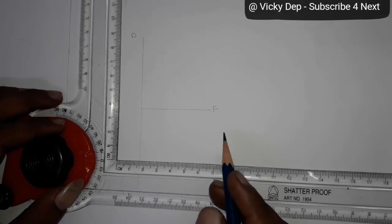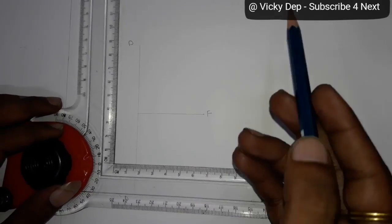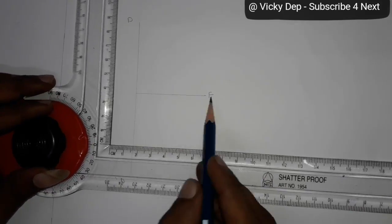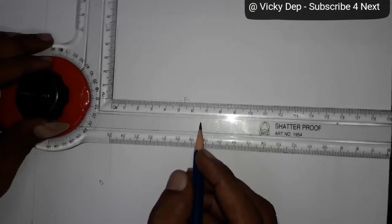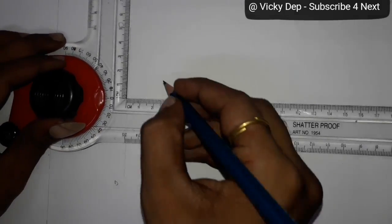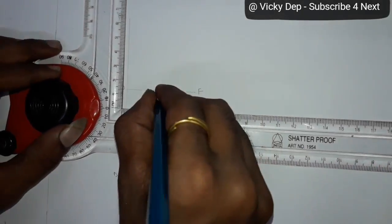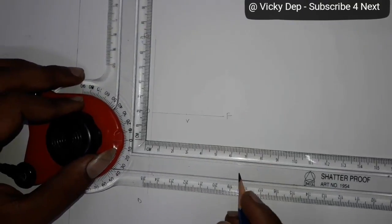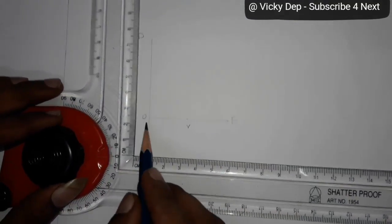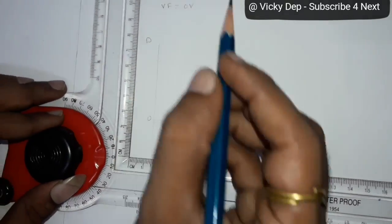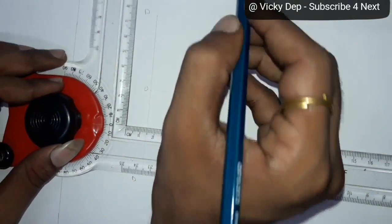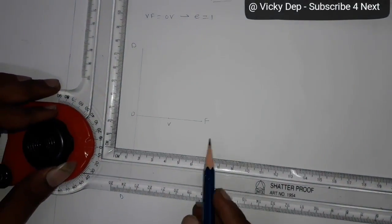From this directrix, this F is 50 mm as given in question. Now as eccentricity E is equal to 1, you have to divide it equally from this point O to F. Divide it equally, that is at 25, you will get the point vertex point V. Now VF is equal to OV, I will write here VF is equal to OV, as eccentricity E is equal to 1 for parabola.